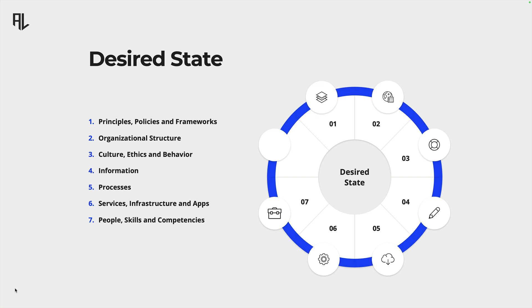In summary, the desired state of an information security strategy is a comprehensive, well-oiled machine. Each component — from principles and processes to people and technology — works together seamlessly to protect your business and support your overall objectives.